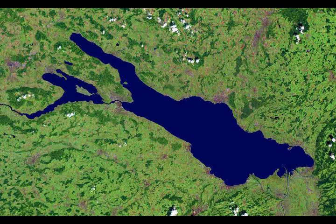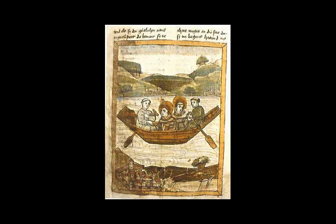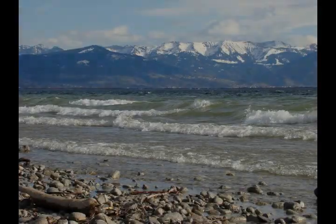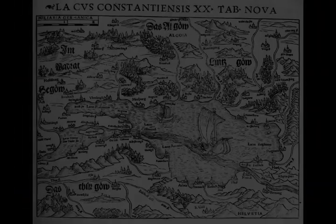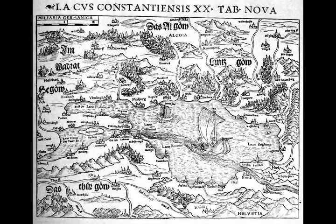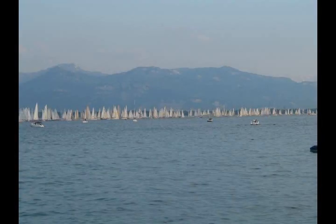Lake Constance is the third largest freshwater European lake in surface area after Lake Geneva and Lake Balaton in central and western Europe. It is 63 kilometers long and nearly 14 kilometers at its widest point, covers about 536 square kilometers, and is 395 meters above sea level. Its greatest depth is 252 meters, exactly in the middle of the upper lake, and its volume is about 48 cubic kilometers.